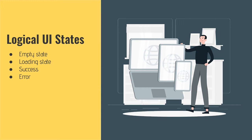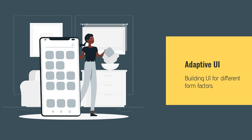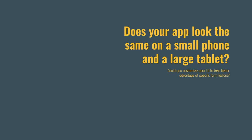It's very important that we handle these states. That's why we're adding an empty state so that when the user installs our app for the first time, we don't just show blank fragments with no hint of what the user should do. And we're adding a loading state so that when we make calls to load the forecasts, there's some indicator that something is happening in the background. The other part of adaptive UI is building UI for different form factors, which is really important on Android.